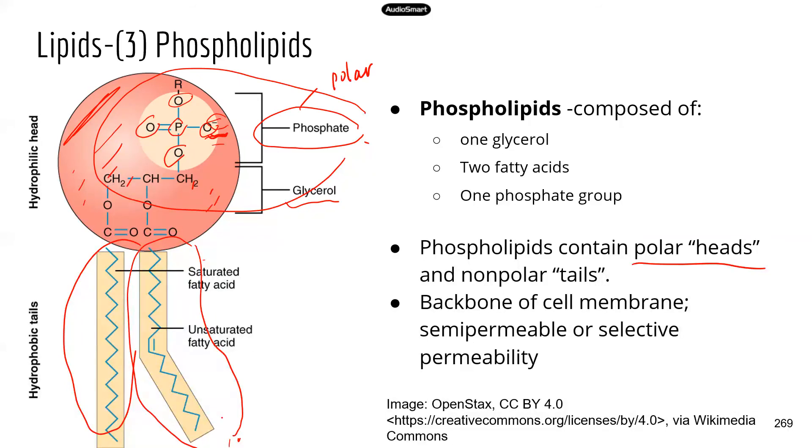Remember, phospholipids are the backbone of cell membrane. And because of the phospholipids, the cell membrane is selective in terms of what can go through the cell membrane.